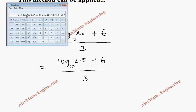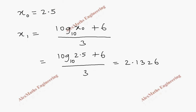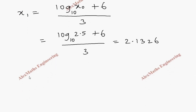Rounding to 4 decimal places, x₁ equals 2.1326.